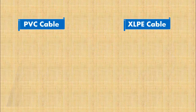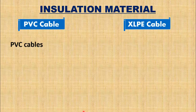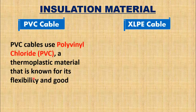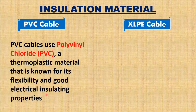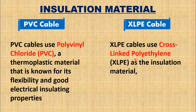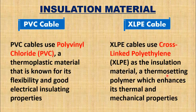The first difference is based on insulation material. PVC cables use polyvinyl chloride, a thermoplastic material that is known for its flexibility and good electrical insulating properties. XLPE cables use cross-linked polyethylene as the insulation material, a thermosetting polymer, which enhances its thermal and mechanical properties.